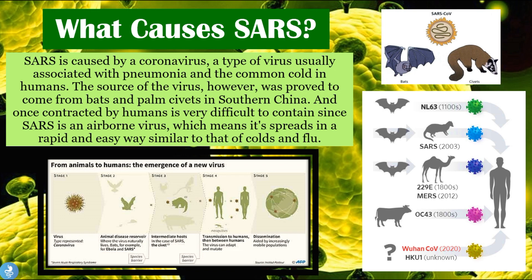Then we had the intermediate host, which became an important part of this investigation — the palm civets. Palm civets are actually a meat or delicacy which Chinese people enjoy. This outbreak actually began from the ingestion of these civets, which tested positive for the coronavirus. Once the human host became infected, it was very easy for the virus to spread, as it is airborne and spreads rapidly through a cough or a sneeze.